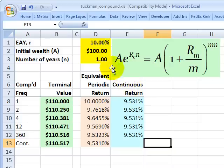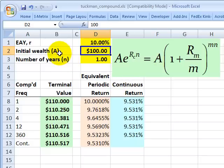In this example, I'm going to assume an effective annual yield of 10% and an initial wealth denoted by capital A of $100. We can think about this as $100 in the bank at the beginning of the year. And then a number of years that I want to compound denoted by small n. I'm going to keep it simple and assume one year, n equals 1.